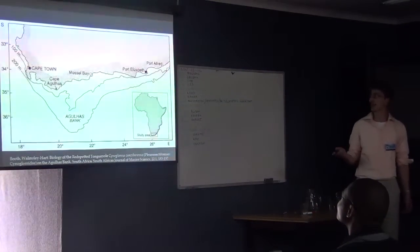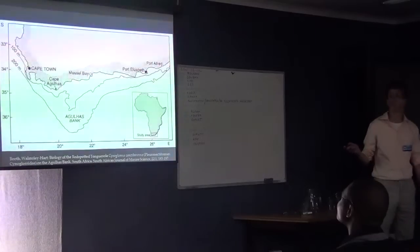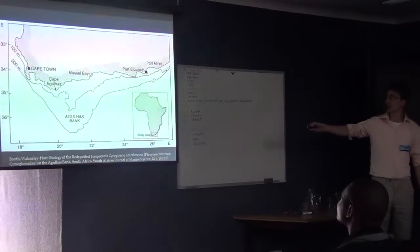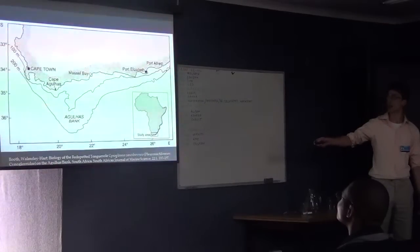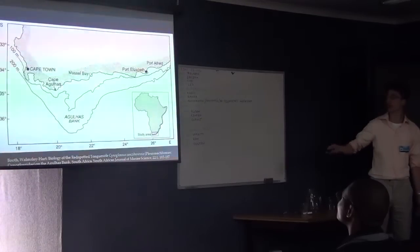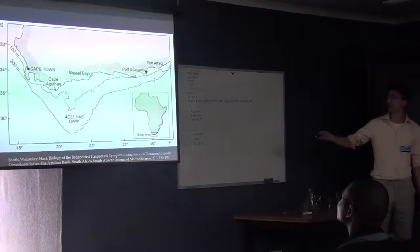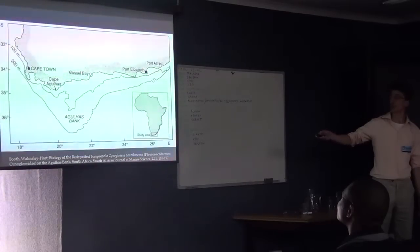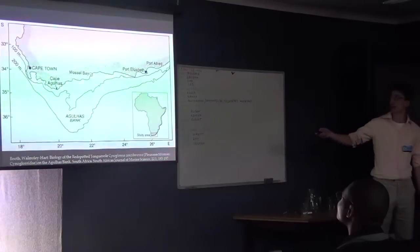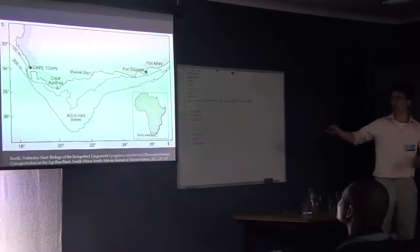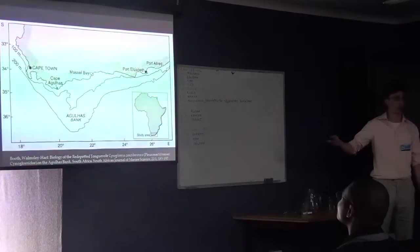This is the south coast of South Africa. Mossel Bay is here, Cape Agulhas here. The Agulhas Bank is where all the trawl fishing takes place. The inshore fishery takes place within the 100-meter isobath, and the offshore fishery takes place from there on. There's a clear distinction between the two.